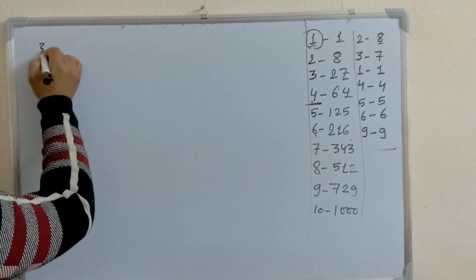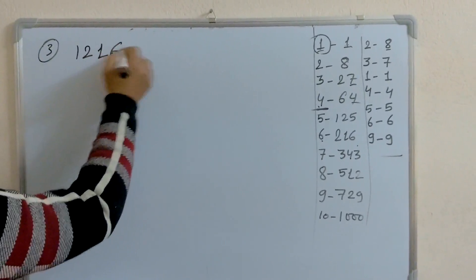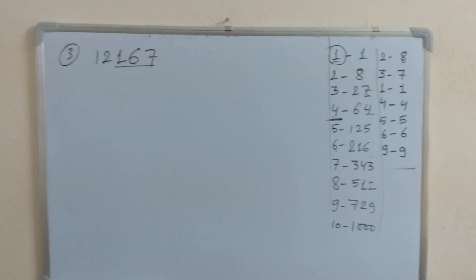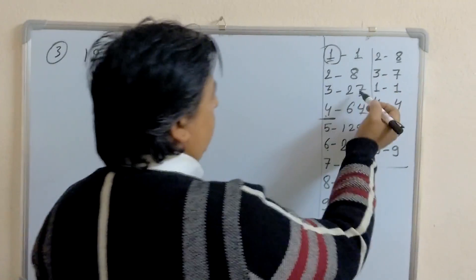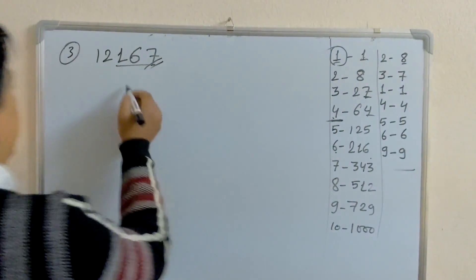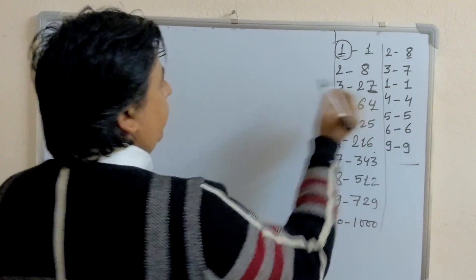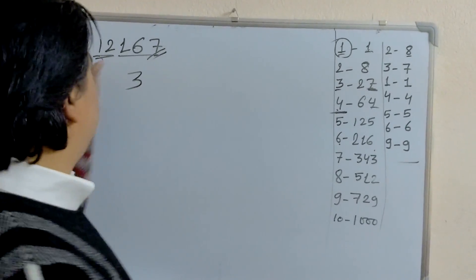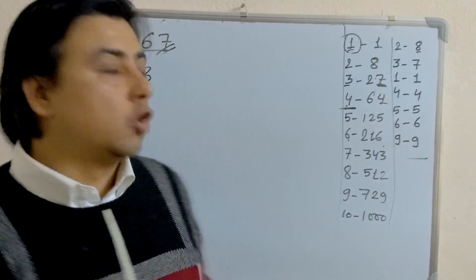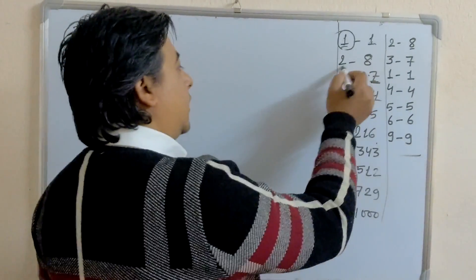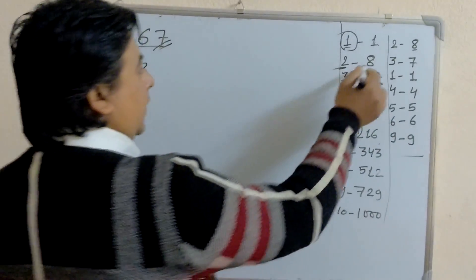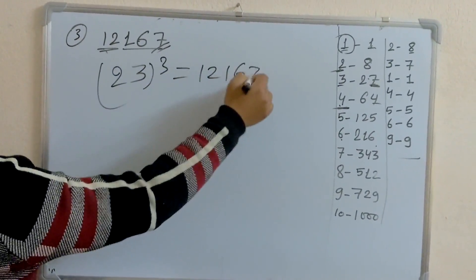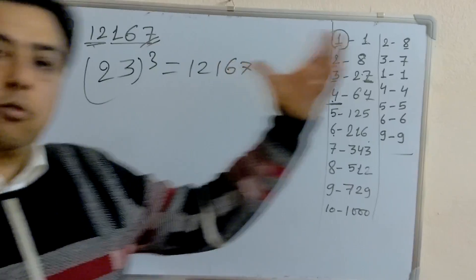Let's take the next example: 12167. Take the last 3 digits — 167. The last digit is 7, which corresponds to 3 cube, so write 3. The remaining number is 12, which lies between 8 and 27, so take the smallest one — 2 cube equals 8, so write 2. Therefore, 23 cubed equals 12167, and the cube root of 12167 is 23.